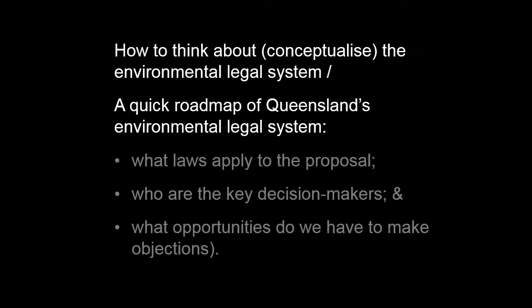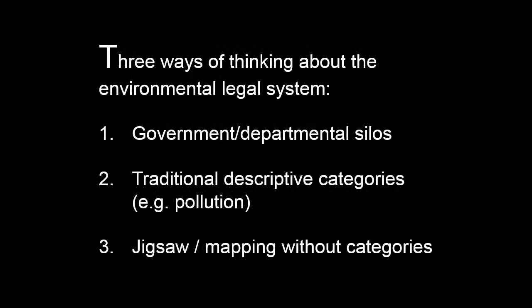Our problem is to put aside that there's already been a case about it and just try to unpack how it fits within the regulatory system and why planning is relevant to it. How we think about the environmental legal system — conceptualising it — is really important because there are many ways you can get it wrong. I'd like to give you a quick roadmap of Queensland's environmental legal system to unpack what laws apply to the proposal, who are the key decision-makers, and what are the opportunities for objections. There are three broad ways to think about it: government silos, traditional descriptive categories such as pollution, and a jigsaw approach.